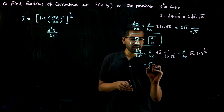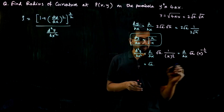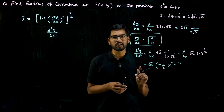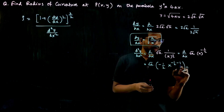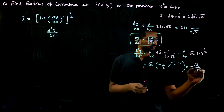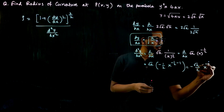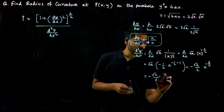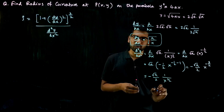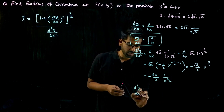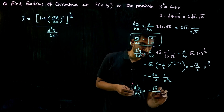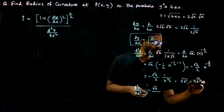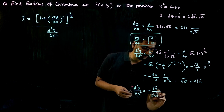So the differentiation gives √a as a constant. Here n = −1/2, so applying the power rule gives (−1/2)·x^(−3/2). This becomes −√a/2 · x^(−3/2), or −√a/(2·x^(3/2)). Since x^(3/2) = x·√x, d²y/dx² = −√a / (2·x·√x).